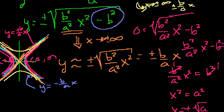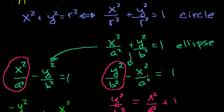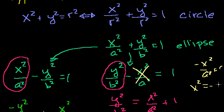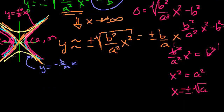Another way to think about it: for this vertical hyperbola that opens up and down, x could equal 0, but y could never equal 0. Looking at the original formula, if x is 0, this term cancels and you can solve for y. But if y were 0, you'd have minus x squared over a squared equals 1, meaning x squared equals minus a squared — impossible without imaginary numbers. So y can never equal 0, which confirms it opens up and down.